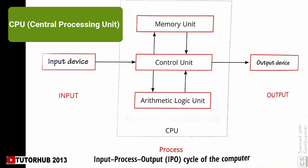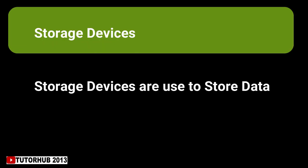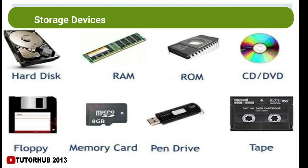The input devices, output devices, and CPU of a computer work together to execute instructions — this is called the input-process-output cycle. The first part is input, the second part is process, and the third part is output. The diagram of the input-process-output cycle is shown. Next, storage devices are used to store data such as songs, pictures, games, and movies. They are light and can be easily carried from one place to another, allowing us to store and transfer data to and from a computer quickly.